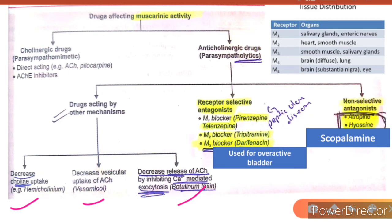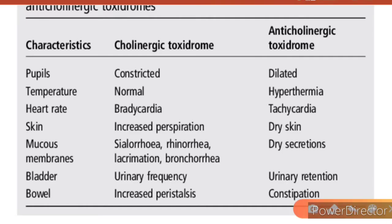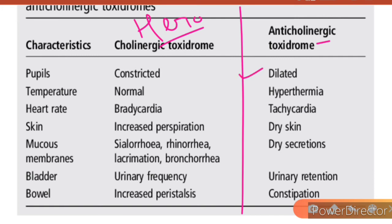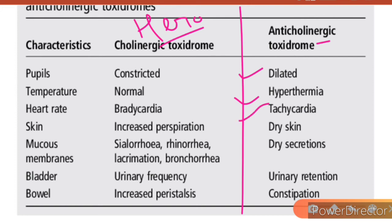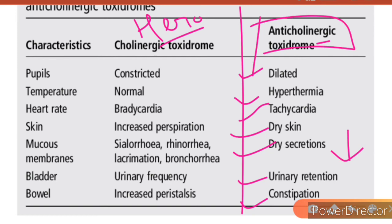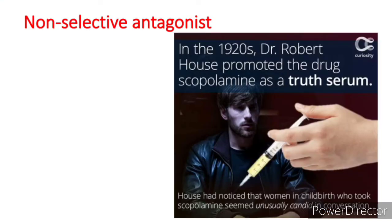Anticholinergic actions are exactly opposite to cholinergic actions. Cholinergics constrict the pupil, so anticholinergics dilate it — this is mydriasis. Anticholinergics cause hyperthermia by decreasing sweating, tachycardia, dry skin and dry secretions — basically all secretions are decreased. They also cause urinary retention and constipation.